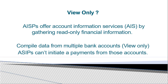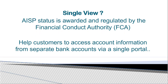AISPs gather information and publish read-only information — you can only view, you cannot do anything else. If you have multiple bank accounts, you can see them in a single view. AISPs cannot initiate any payments; they can only show your balance, mini statement, or generate your account statement. AISPs are regulated by the Financial Conduct Authority.